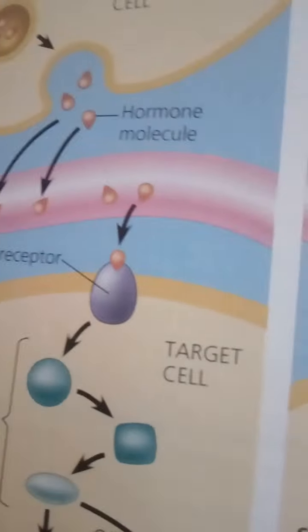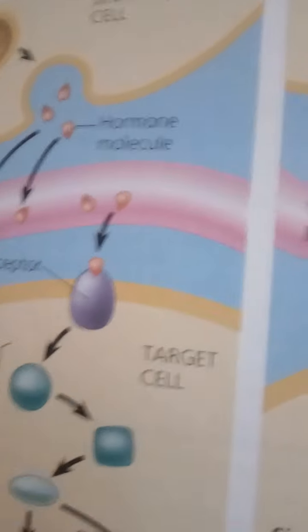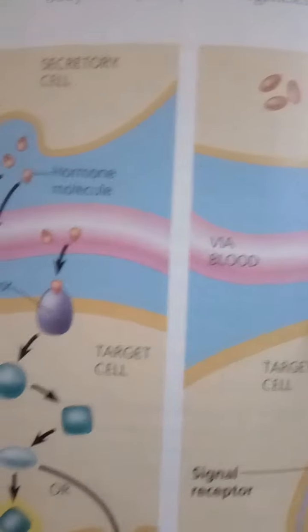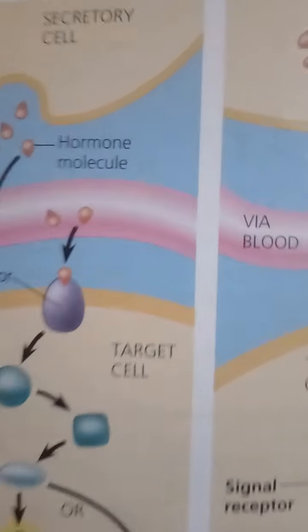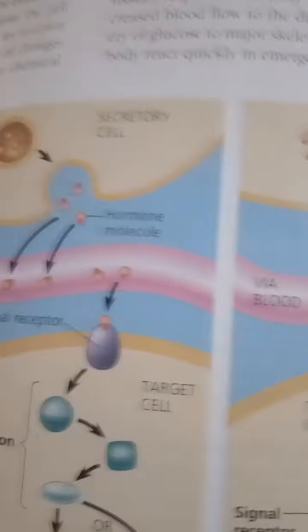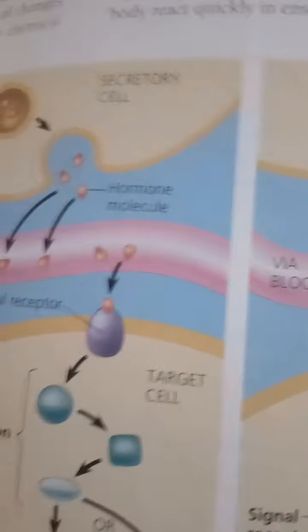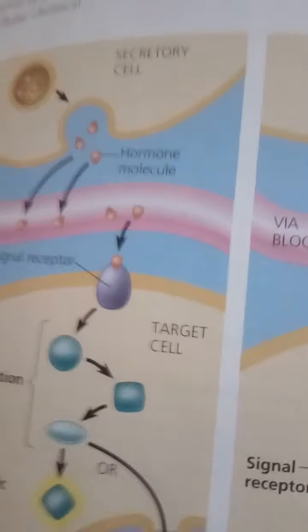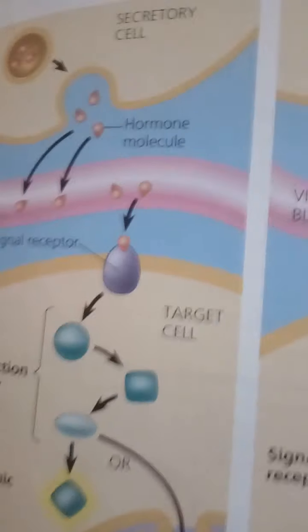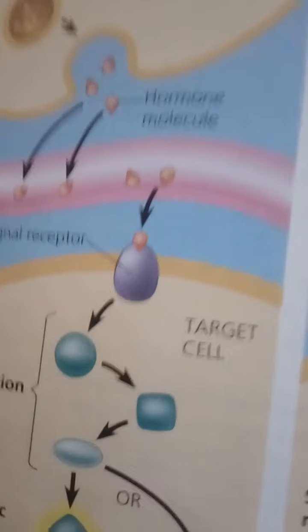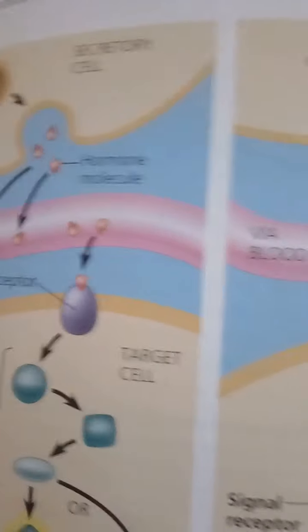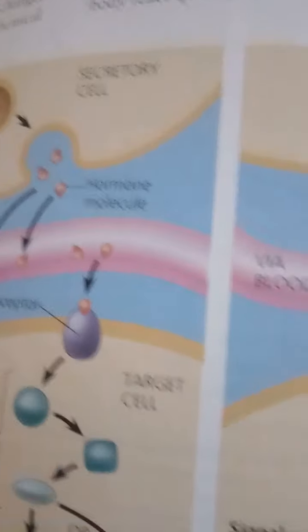Let's take a closer look at signal transduction and the responses induced by different types of chemical signals. For cell surface receptors for water-soluble hormones, the receptors for most water-soluble hormones are embedded in the plasma membrane, projecting outward from the cell surface. Binding of a hormone to its receptor initiates a signal transduction pathway — a series of changes in cellular proteins that converts an extracellular chemical signal to a specific intracellular response.